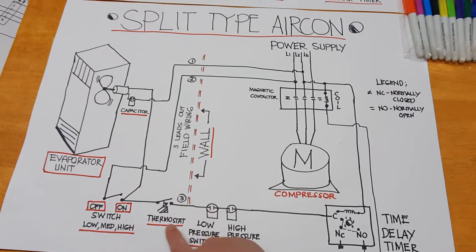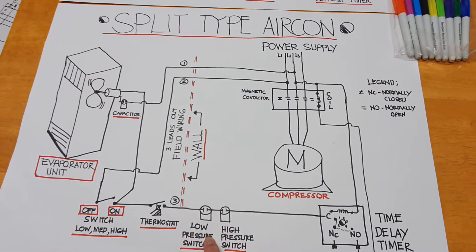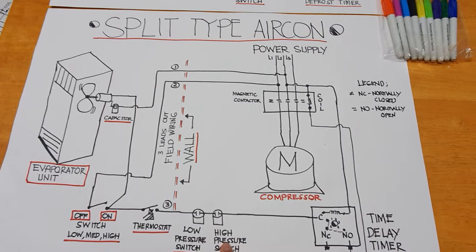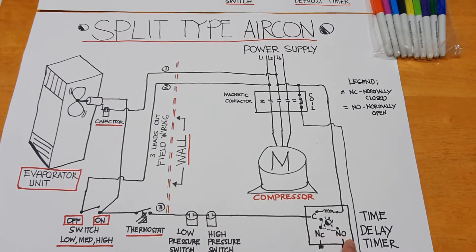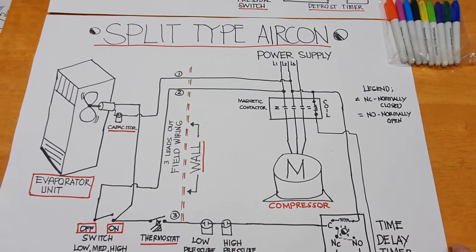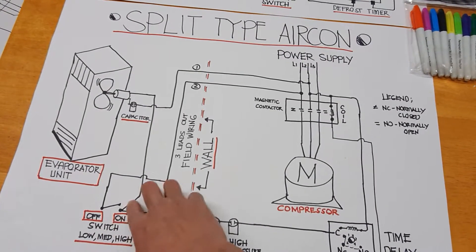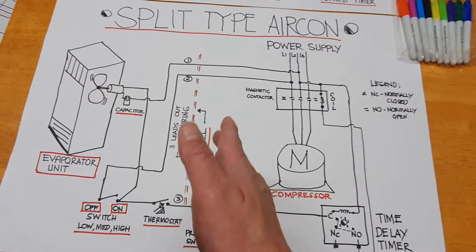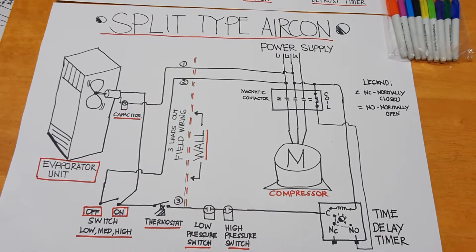This is the controls here: thermostat, low pressure switch, high pressure switch, and the time delay timer. And this is the switch of low, medium, and high. I'm doing this like a simple diagram so that you can understand.